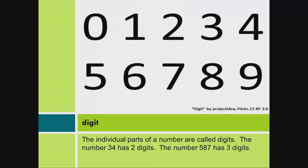Digit. The individual parts of a number are called digits. The number 34 has two digits. The number 587 has three digits.